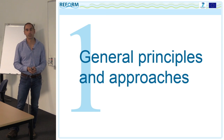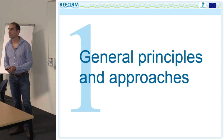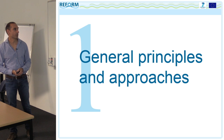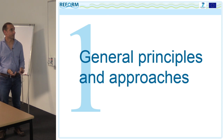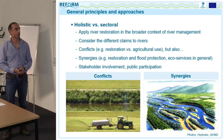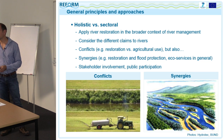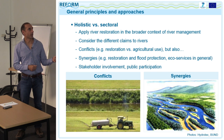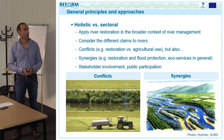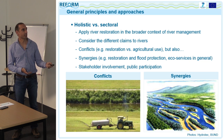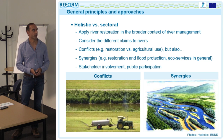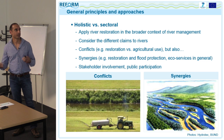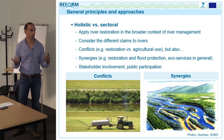What are the general principles and approaches? There is some overlap with previous presentations. The first principle is to follow a holistic rather than a sectoral approach — not only looking at ecological effects, but also at other ecosystem functions and services, considering all different claims to rivers. You have to consider possible conflicts, for example between agriculture and restoration, but also synergies such as flood protection and recreation.